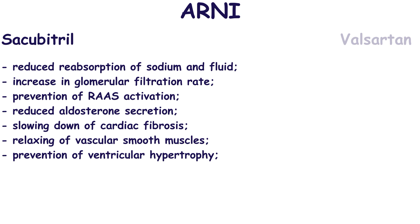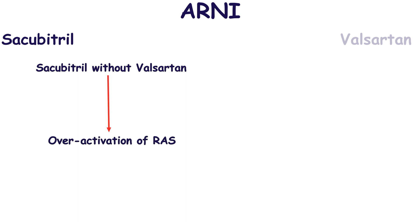Natriuretic peptides are degraded under the influence of a neutral endopeptidase, neprilysin. Sacubitril increases serum level of natriuretic peptides by the inhibition of neprilysin. But if sacubitril is used without additional inhibition of the renin-angiotensin-aldosterone system, excessive aldosterone is secreted. For its prevention, sacubitril is combined with valsartan.